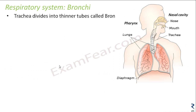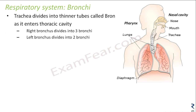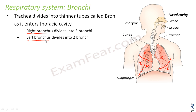Next are the bronchi. The trachea divides into thinner tubes called bronchi as it enters the thoracic cavity. As the trachea enters the thoracic cavity it divides into branches, and these branches are known as bronchi. It divides into two branches: the right bronchus and the left bronchus. The right bronchus enters the right lung and the left bronchus enters the left lung.